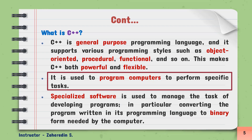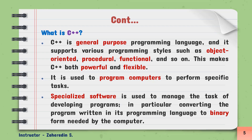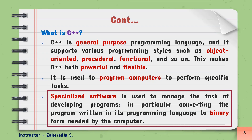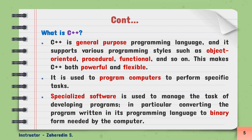Specialized software is used to manage the task of developing a program, particularly converting the program written in its programming language to the binary form needed by the computer. So this C++ programming language needs specialized software to develop the program. This specialized software should convert the program written in the programming language into a machine or binary form that is needed by the computer. As you know, computers only understand machine language, so that is the reason why C++ programming language needs specialized software.